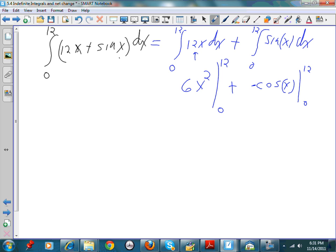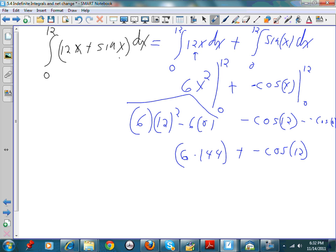So what's this going to evaluate to? This is going to be 6 times 12 squared minus 6 times 0. That's this thing right there. That's going to be what? 6 times 144 plus, or what does this become? This is minus the cosine of 12 minus a minus cosine of 0, which is 1. So this is just going to be minus the cosine of 12 plus 1.